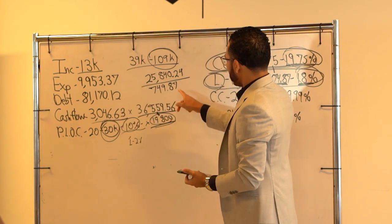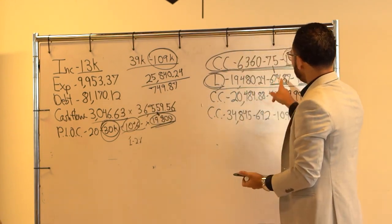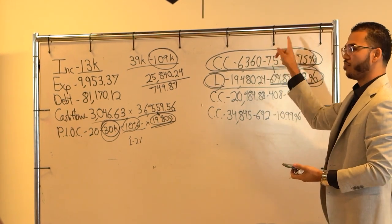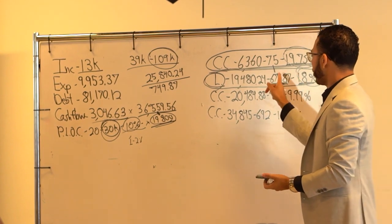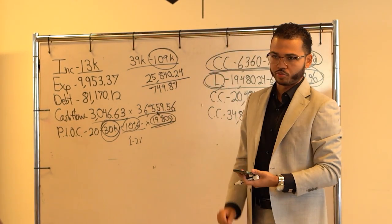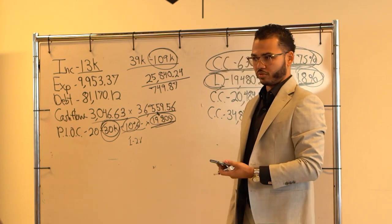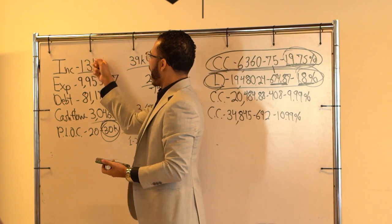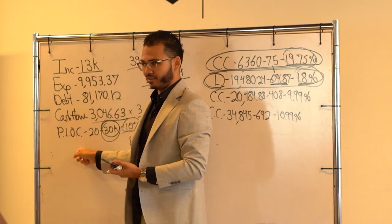This $674.87 was principal and interest. $75 principal and interest. But when you move that into a line of credit, guess what? It is 100% principal. Right? Because of how we're going to be paying the line of credit.